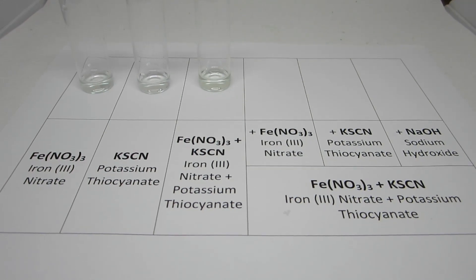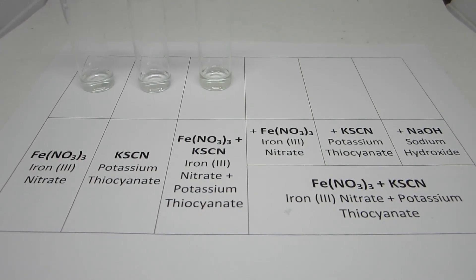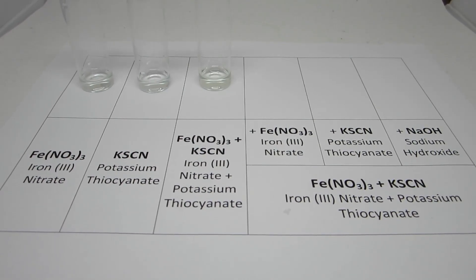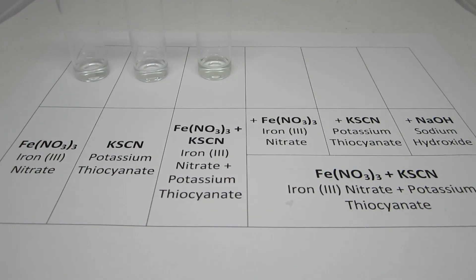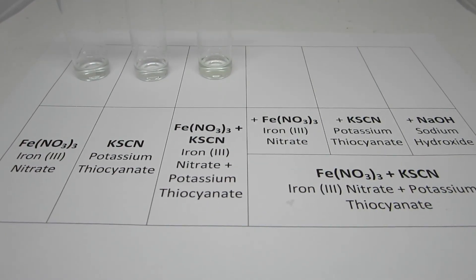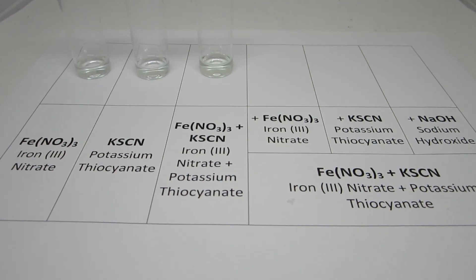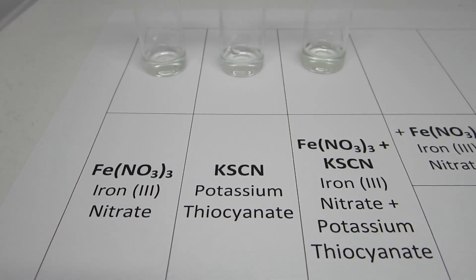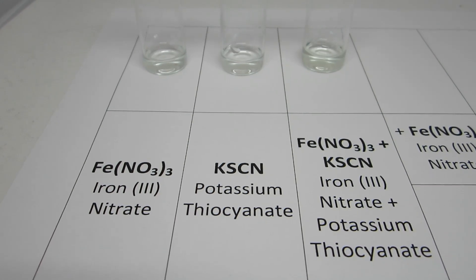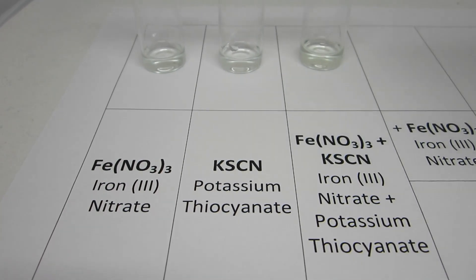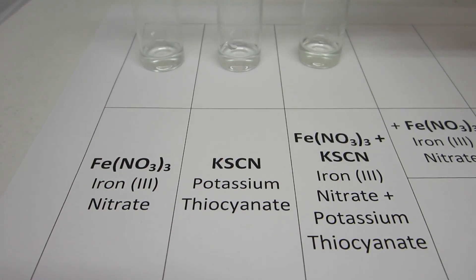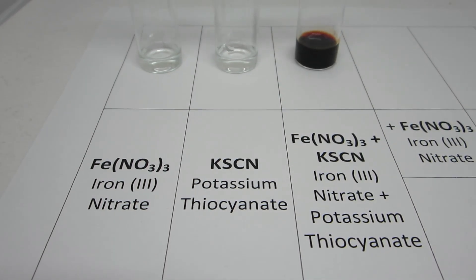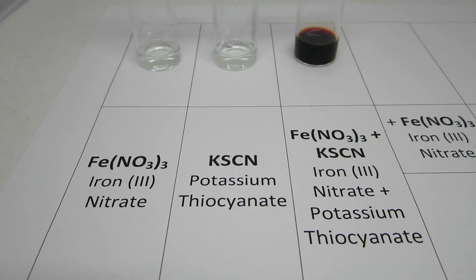In the fifth equilibrium reaction, iron(III) nitrate is again used and reacted with potassium thiocyanate. The reaction produces the complex ion of iron thiocyanate. Both the iron nitrate and potassium thiocyanate are clear and colorless solutions; however, upon reaction, an intense deep red color is produced, which is the signature of the iron thiocyanate complex.